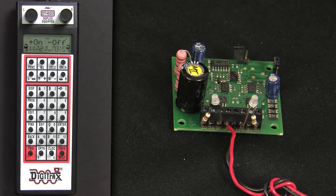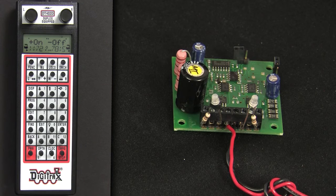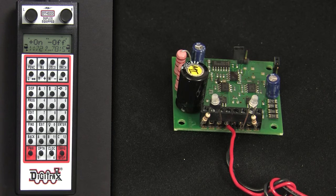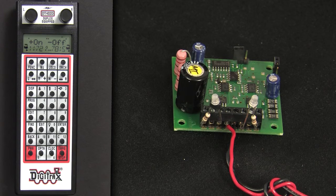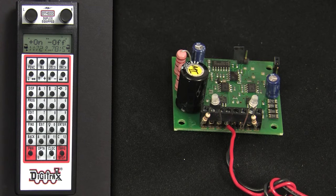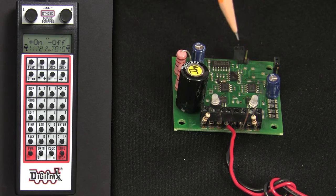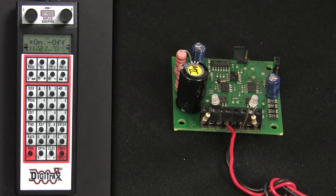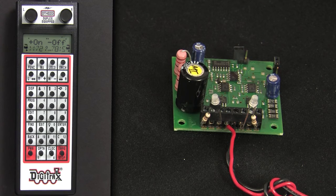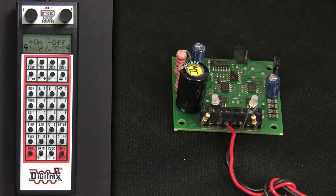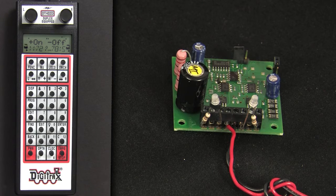Configuration of DS-52 outputs. The DS-52 comes from the factory set to control solenoid switch machines. Note the open configuration of the configuration jumper. If you wish to change the configuration of the DS-52 to control slow motion machines, first turn power off.